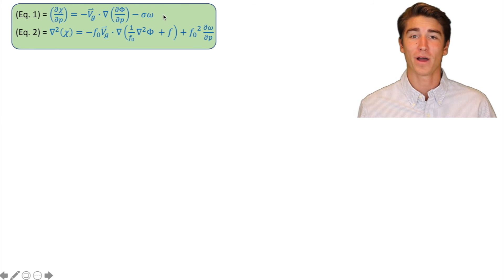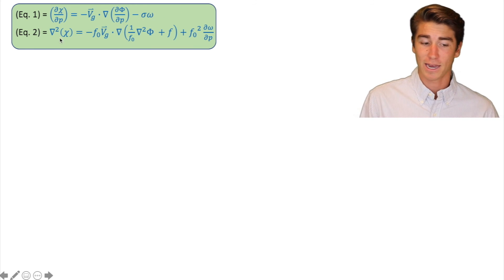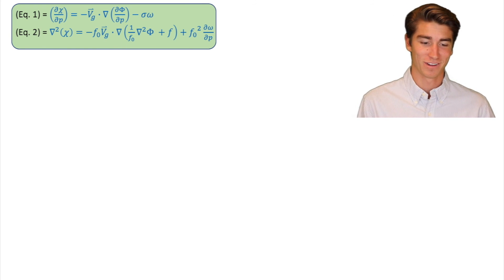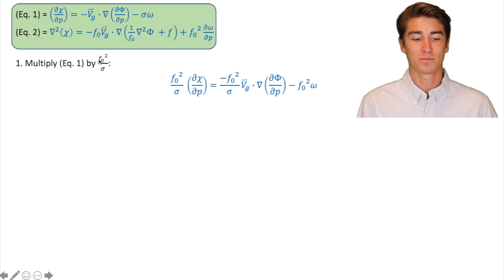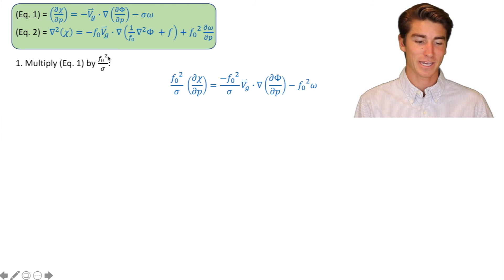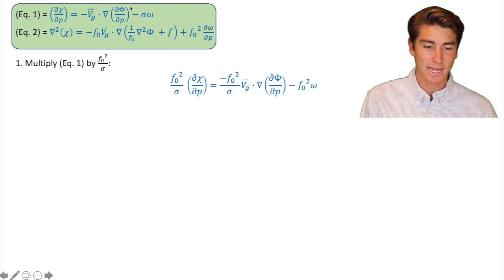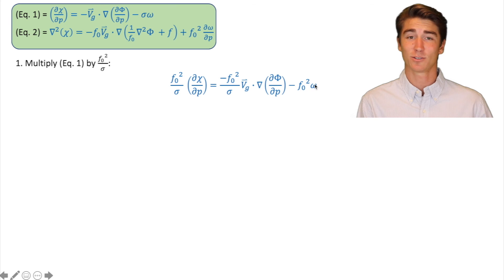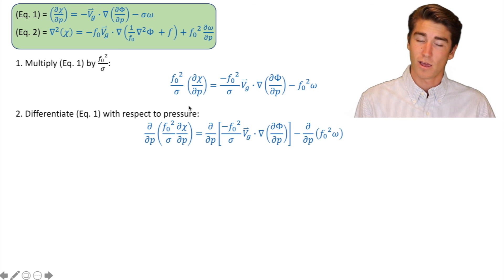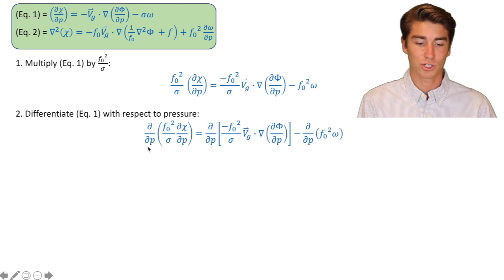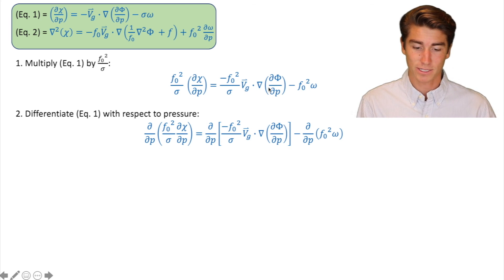So we have equation one, which we got by manipulating the thermodynamic equation, and equation two, which we got by manipulating the vorticity equation. Now we're going to manipulate them even more and then combine them. We're going to multiply equation one by f-zero squared over sigma. Take that equation one and multiply it by that. The sigma on the right side is going to cancel out, so that far right term is just f-zero squared times omega. Next up, we're going to differentiate equation one with respect to pressure — all that means is you put a d/dp in front of each term.